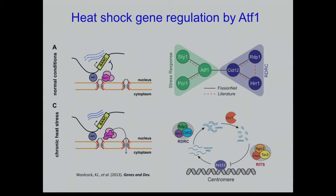We systematically looked for novel interactions connecting two well-studied pathways or modules. On one hand is the stress response pathway — people know STI1 regulates ATF1. On the other hand is the RDRC complex, involved in RNAi pathways and gene silencing of the centromere region. We found novel interactions in Y2H connecting these two modules — the RDRC complex is well-established, but this connection had never been shown before.